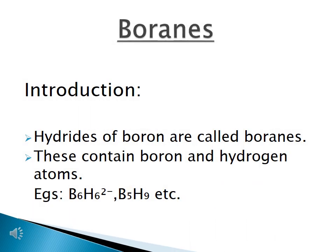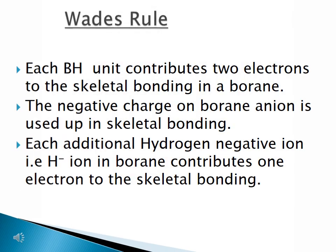Let us first see the introduction to boranes. What are boranes? Hydrides of boron are called boranes. These are nothing but the compounds which contain boron and hydrogen. Examples: B6H6²⁻, B5H9, etc. They are classified based on Wade's rule.